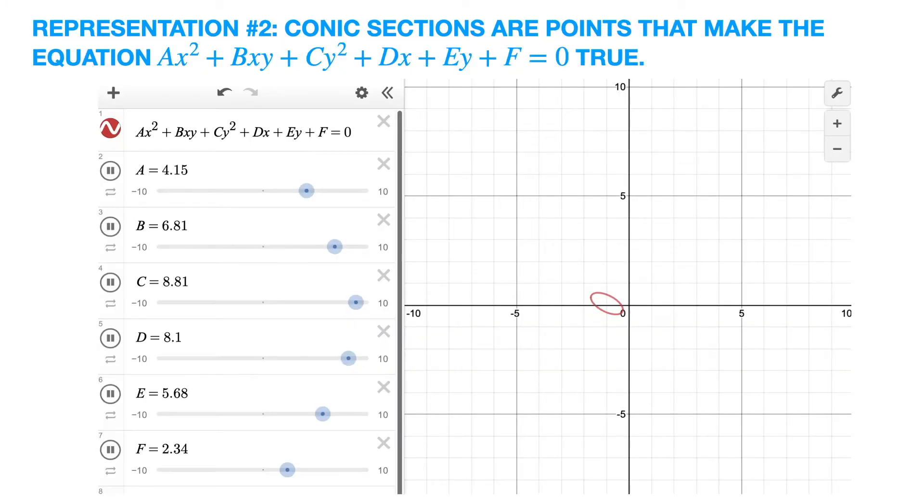Secondly, conic sections can be thought of as the curves consisting of the points xy that make the equation ax squared plus bxy plus cy squared plus dx plus ey plus f equals 0 true.